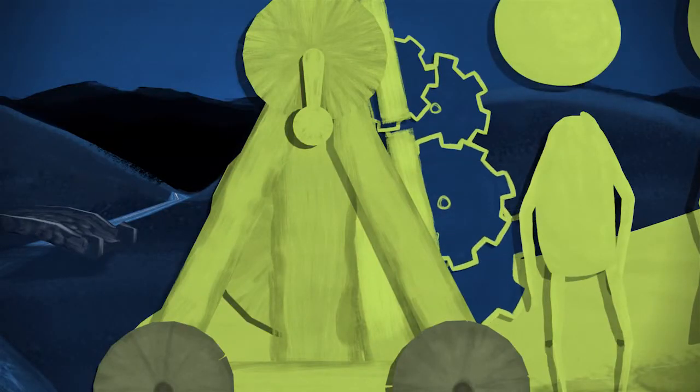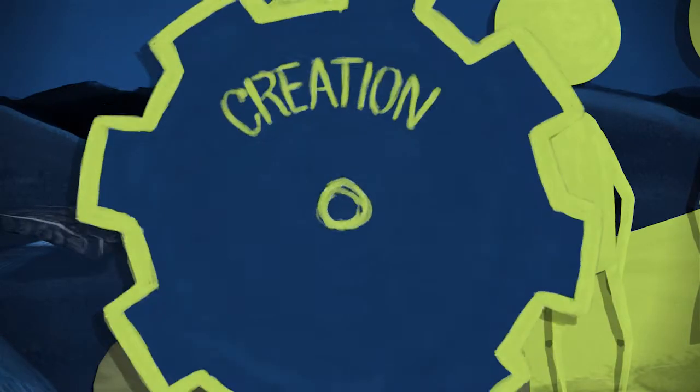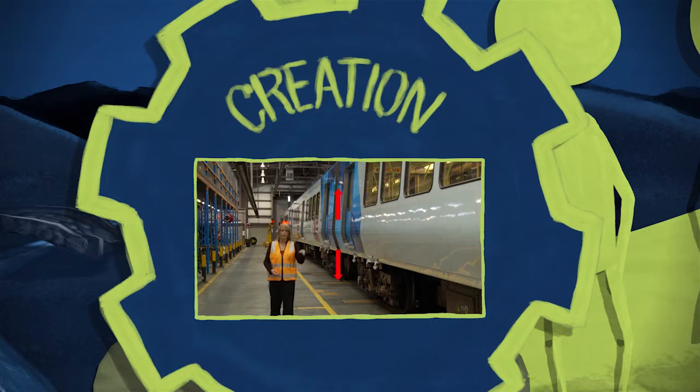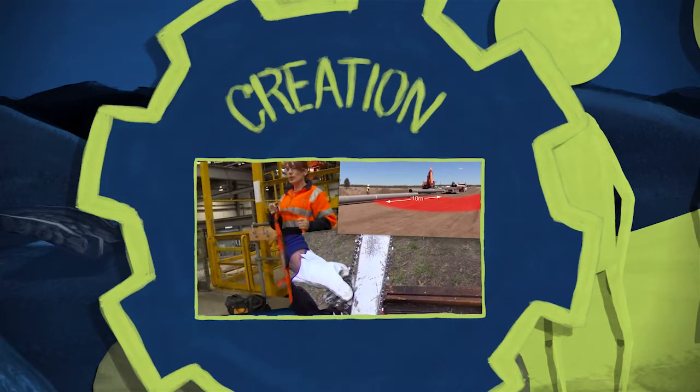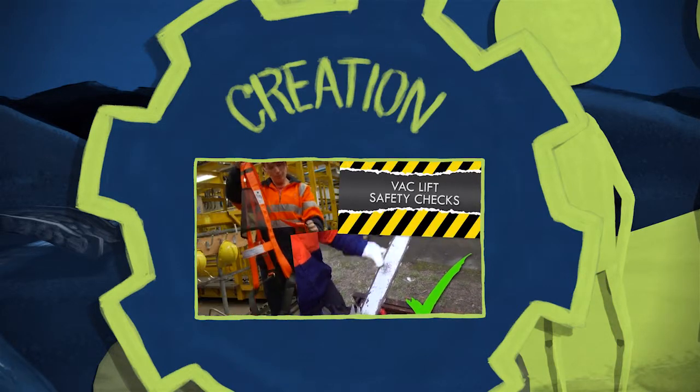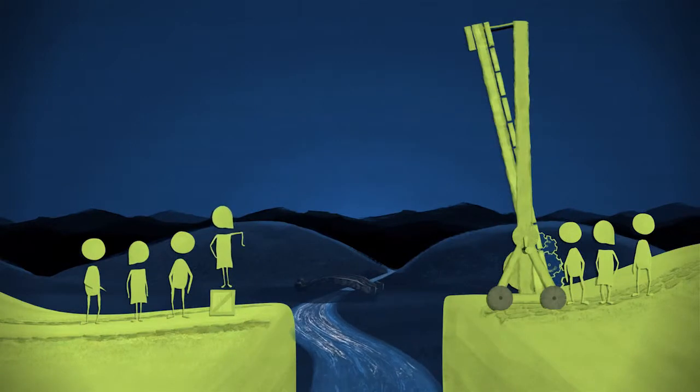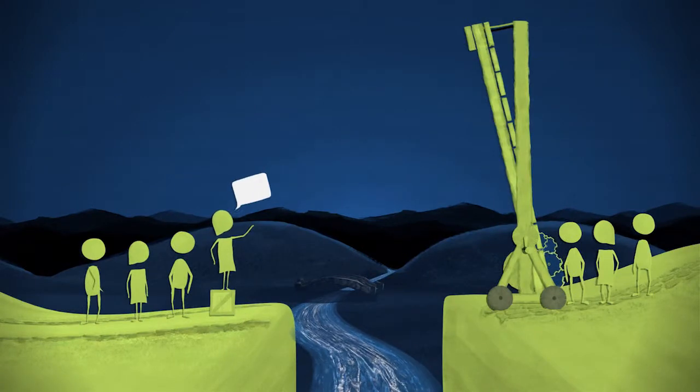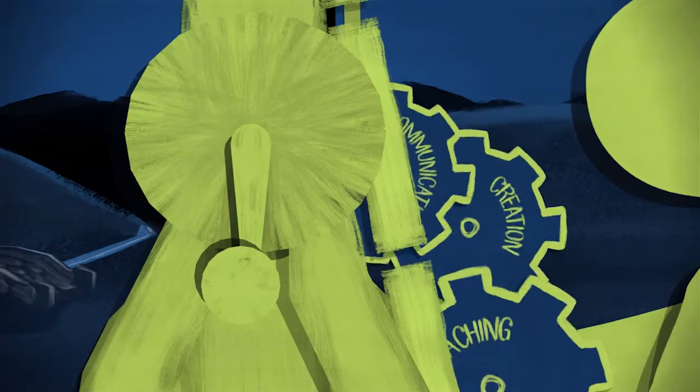Those two cogs working together kick-started the Creation cog. This cog really brought a bit of magic to the mechanism. Every person from any kingdom could now understand how to work together to lower the drawbridge. Finally, a herald was sent out to spread the good news, and the communication cog kicked in.